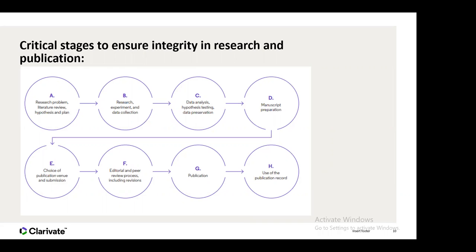There are many stages within the research process where we need to ensure integrity. Right from the beginning — research problem, literature review, hypothesis and plan — you want to ensure that as a researcher you're enabling and guiding them to check that the research they're looking at is credible and follows peer review standards. At the research and experimental stage and data collection, that's where fraud or falsifying research results can occur, though sometimes misconduct happens not purposefully but due to misunderstanding of best practices.